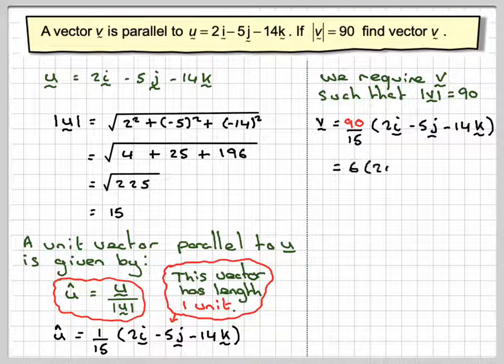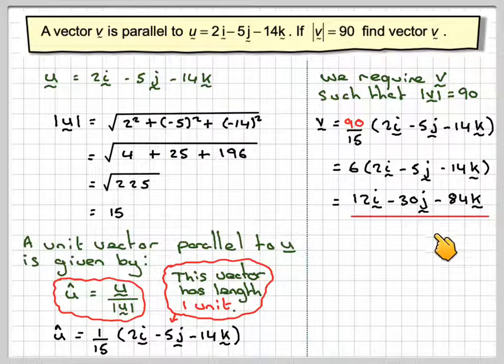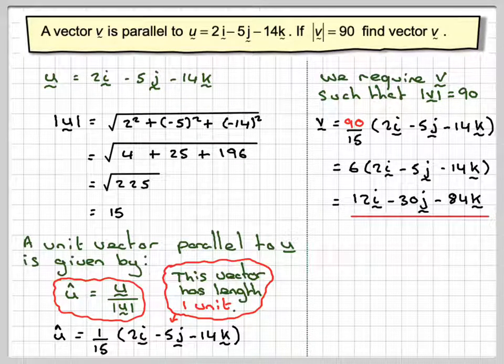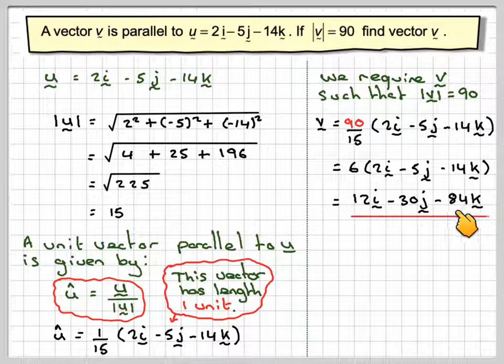90 divided by 15 is 6. And then if we take that 6 in, we're going to get 12i minus 30j minus 84k, which is a vector parallel to this one, which has length of 90.